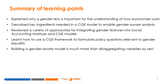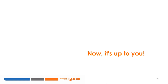This last slide summarizes the main learning points. We explained why a gender lens is important for understanding how economies work. We described the key ingredients a CGE model should have to enable gender-aware distributional analysis. We reviewed a range of approaches to integrate gender features into social accounting matrices and CGE models. We showed how to use a CGE framework to formulate questions exploring policy options for the promotion of gender equality. Finally, we stressed throughout that building a gender-aware model is much more than merely disaggregating variables by sex. We hope you found the module useful and feel stimulated to experiment with these themes and research methodologies in your future work.